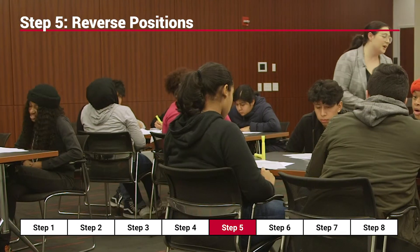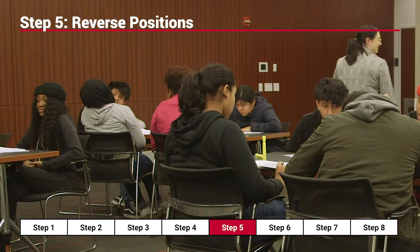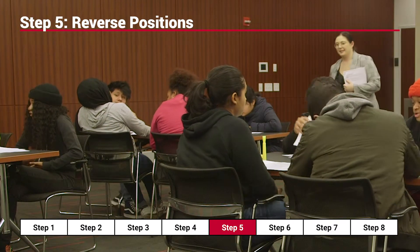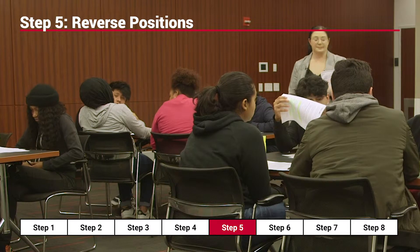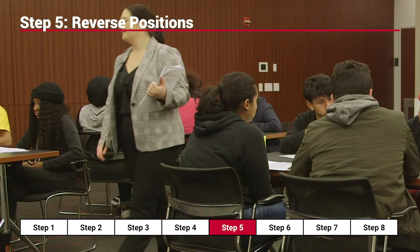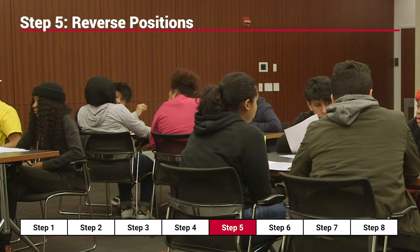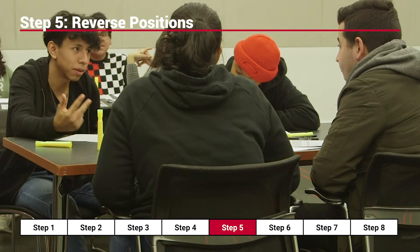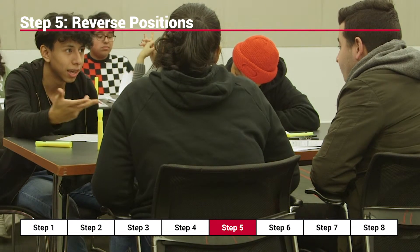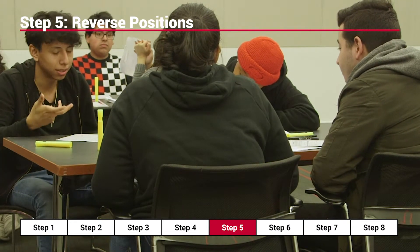For step five, the pairs of students in small groups reverse positions, with the yes side now becoming the no side and the no side now becoming the yes side. In their new positions, each pair works together to select the one best reason they heard from the other pair and adds one additional compelling reason from the reading to support their new positions. When both sides are prepared, they share their reasons and record notes.